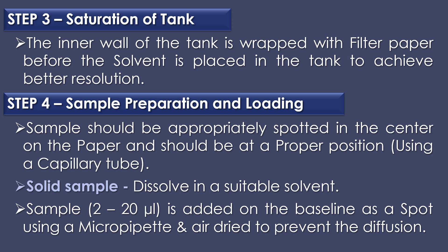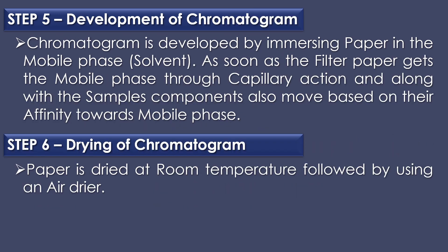The fourth step is sample preparation and loading. Using a capillary tube, the sample should be appropriately spotted in the center on the paper at a proper position. If a solid sample is used, it is dissolved in a suitable solvent. A sample volume of 2 to 20 microlitres is added on the baseline as a spot using a micropipette, dried to prevent diffusion. The fifth step is development of chromatogram by immersing the paper in the mobile phase, where the filter paper draws up the mobile phase through capillary action and sample components move based on their affinity towards the mobile phase.